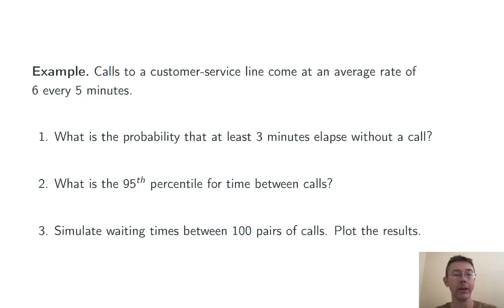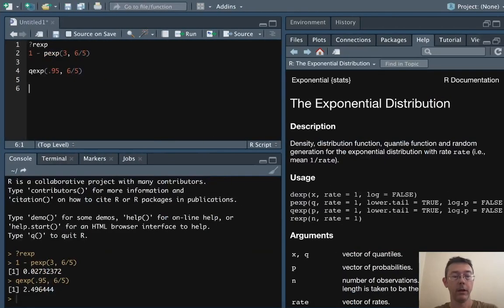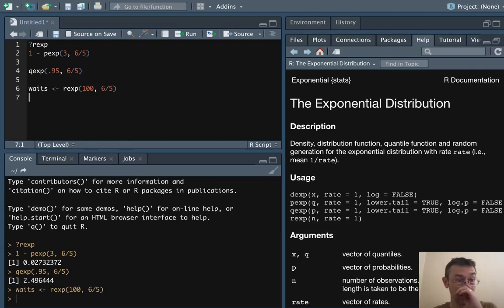Finally, let's simulate waiting time between 100 pairs of calls and plot the results. So to simulate the waiting time, we're going to use rexp. Let's call this variable waits, w-a-i-t-s. We're going to get 100 values with that same parameter, 6/5. There we go.